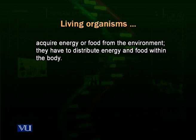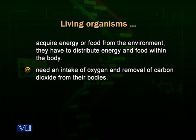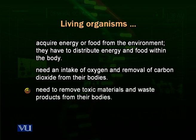Living organisms have to acquire energy or food from the environment, then distribute that food or energy to all parts of their body. Organisms need an intake of different gases, particularly oxygen. They need to remove carbon dioxide from their body, which is produced as a by-product or waste product of the respiration process. They also need to remove metabolic and toxic wastes — the toxic materials produced as by-products of metabolism — and move these unwanted particles from one part of the body to another, then release them into the environment.